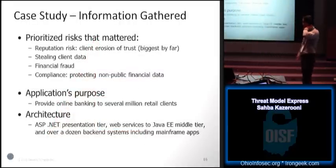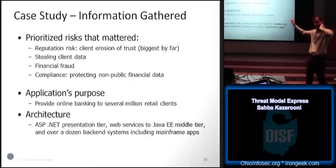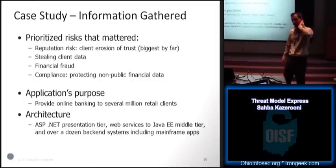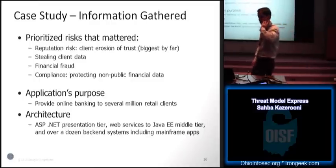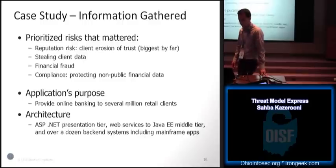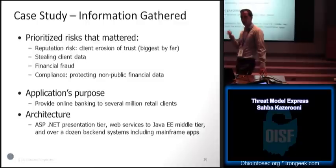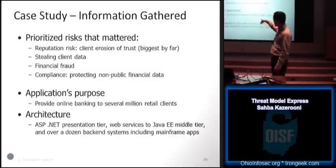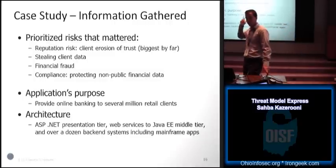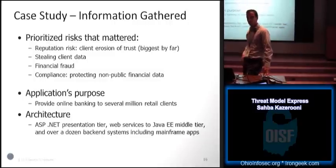Surprisingly with this client, they thought reputational risk was the biggest thing for them — and that was really a surprise. Because normally you think of a bank and you think financial fraud, compliance. But while those were there, it wasn't the biggest priority for them. That was kind of an eye-opener, and it affected the way that we did the threat model later.